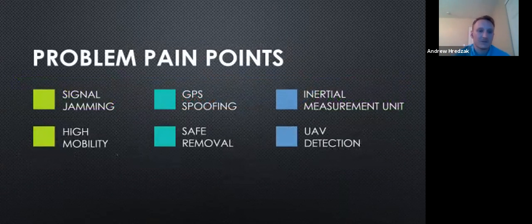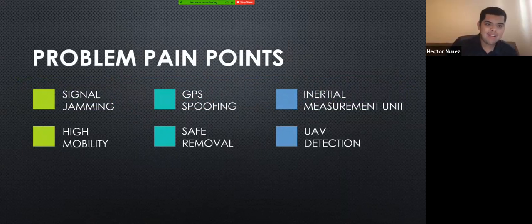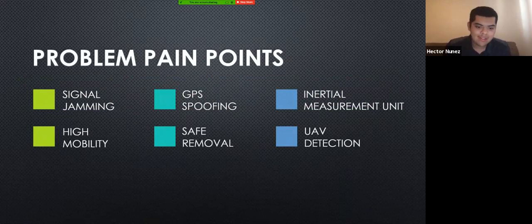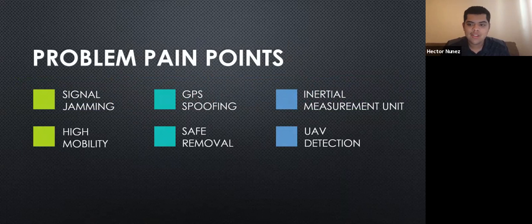Hector will now talk about the biggest challenges to this problem. Based on the background we have presented, we have established six pain points. Two we'd like to address are illegal methods, such as signal jamming and GPS spoofing here in the United States. Another problem is the internal measurement unit of the drone itself and its high mobility, as well as safe removal and UAV detection.